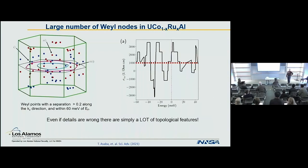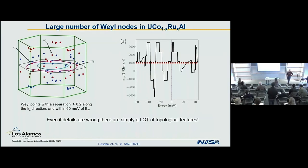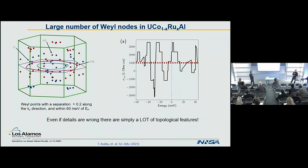Q: The 150+ Weyl nodes within 60 meV — is that a DFT calculation with the f-electrons included? A: Yes. Even at the DFT level the f-bands are somewhat narrow relative to, say, p-bands, which is why you get so many nodes near the Fermi energy.